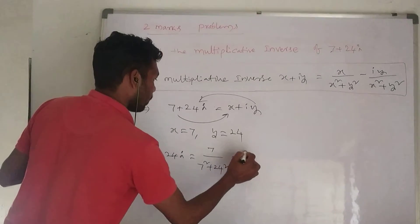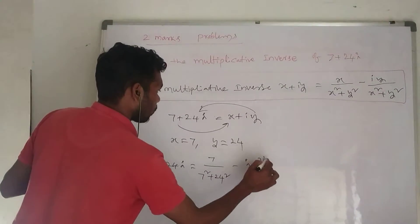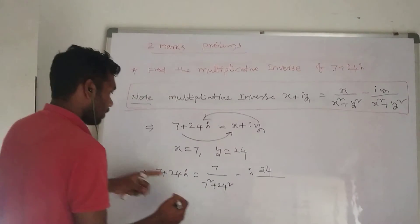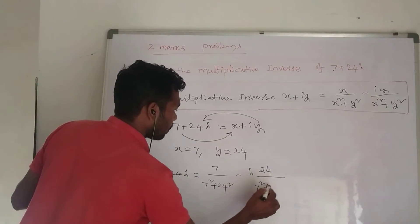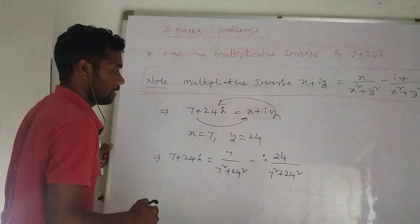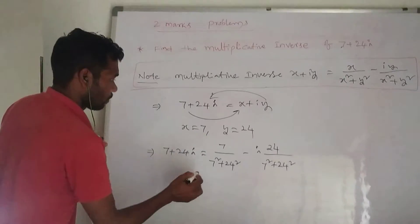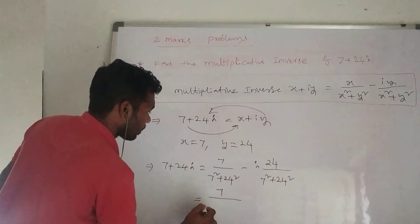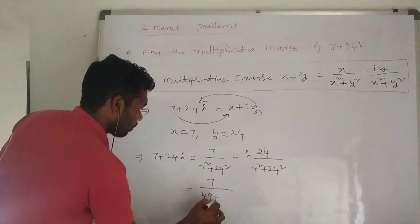...i times 24 divided by 7 squared plus 24 squared. This equals 7 divided by... 7 squared is 49 plus...